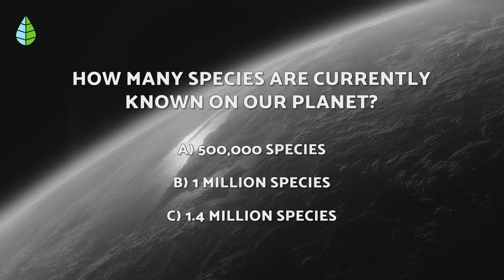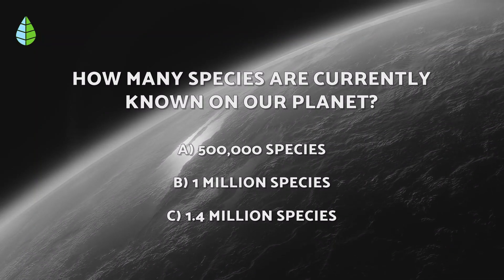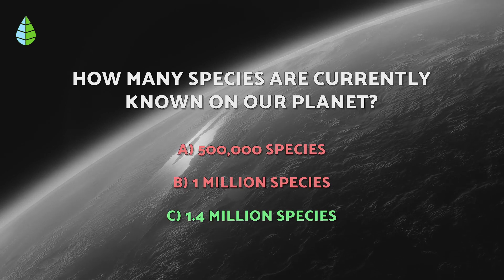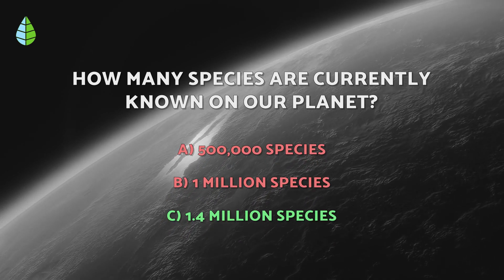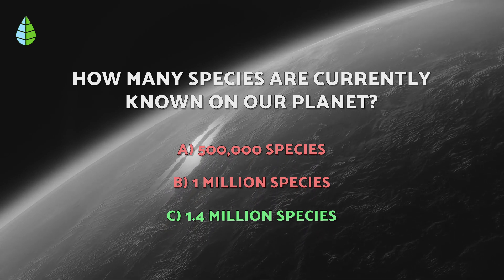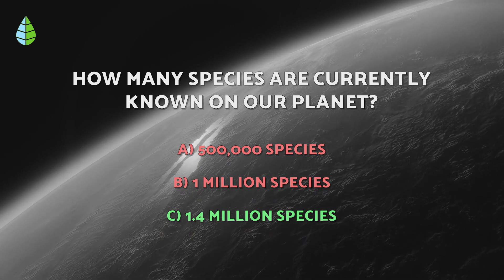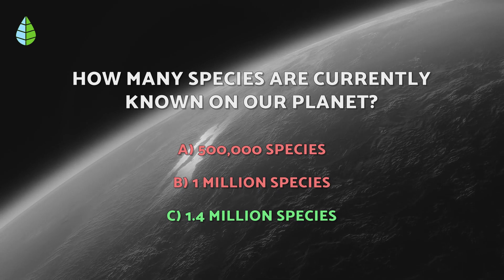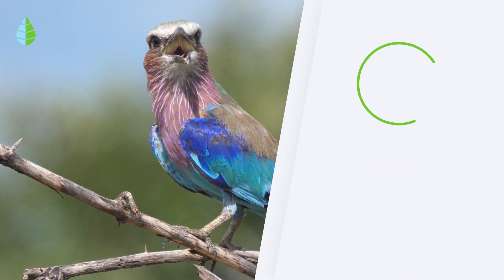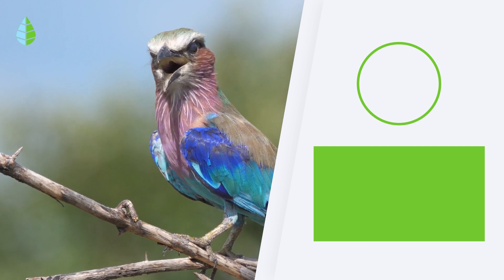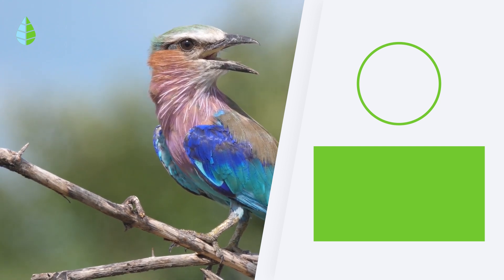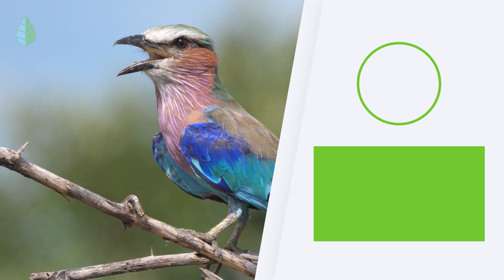Going back to the question we asked earlier — the correct answer is C. The total number of current biodiversity is between 10 and 100 million species. That's it for today. Thank you for watching — let us know in the comments why you think biodiversity is important, and until next time.